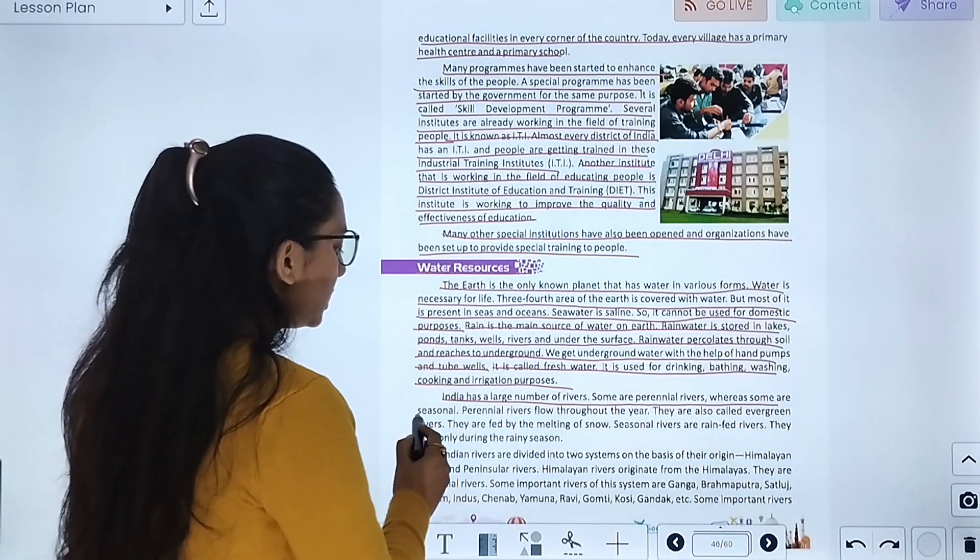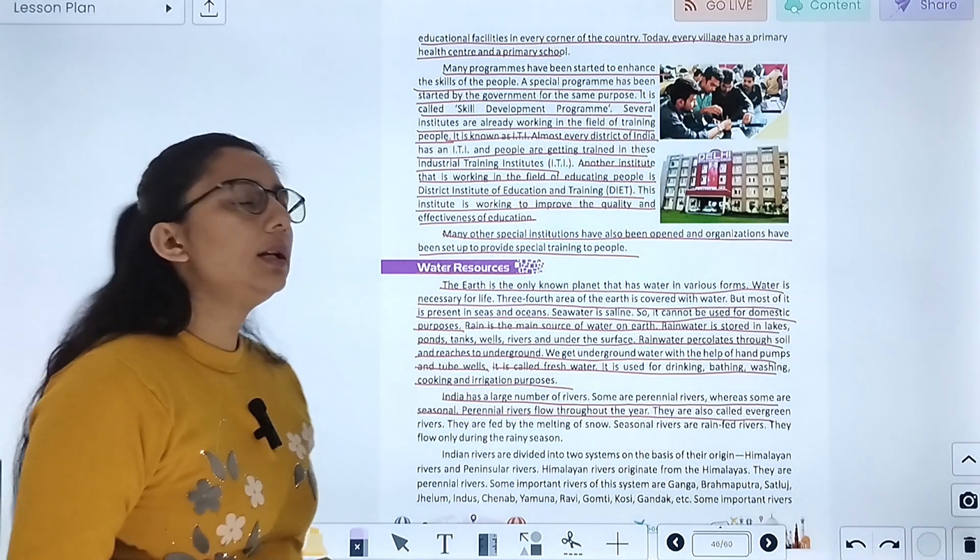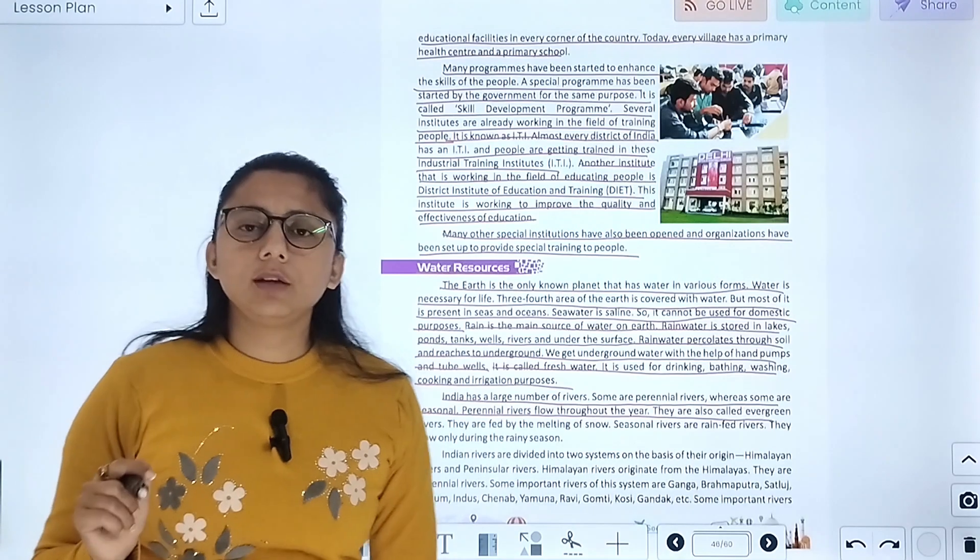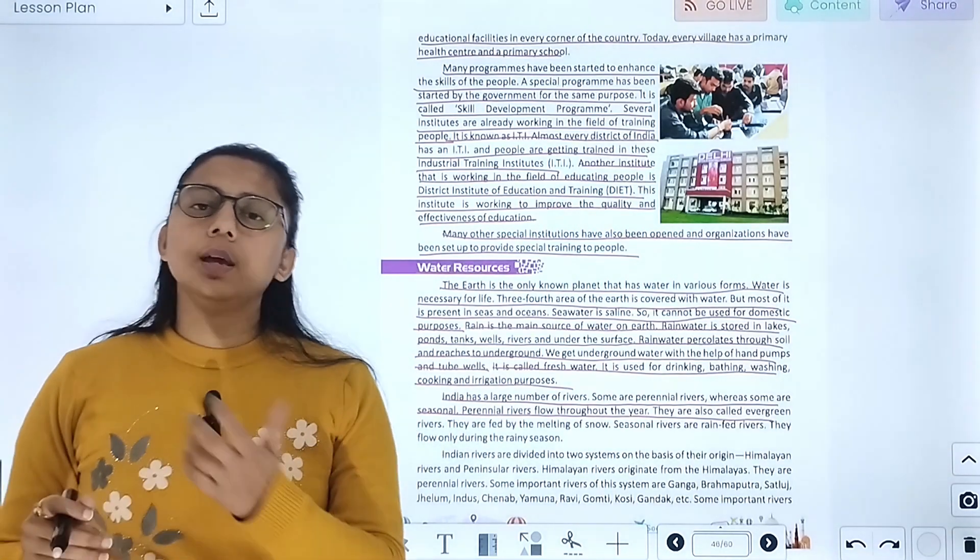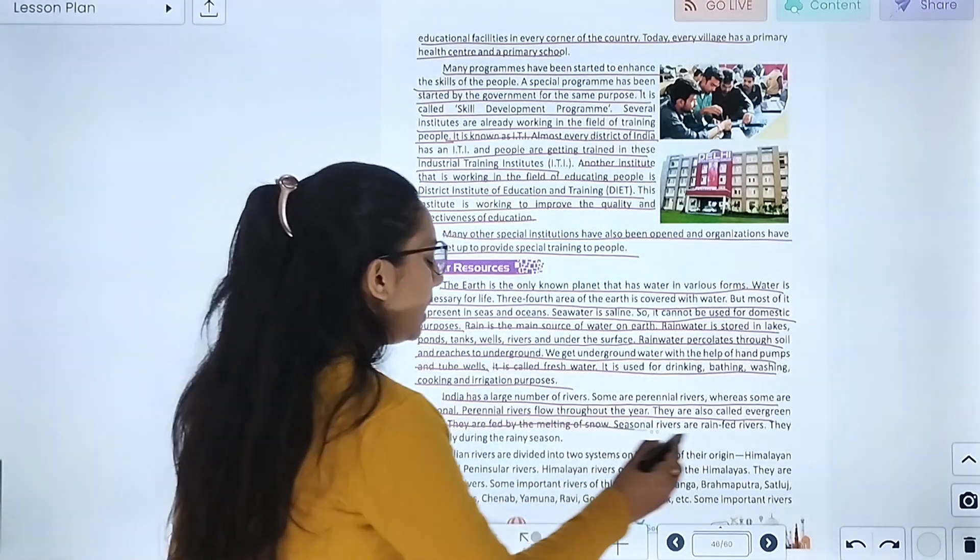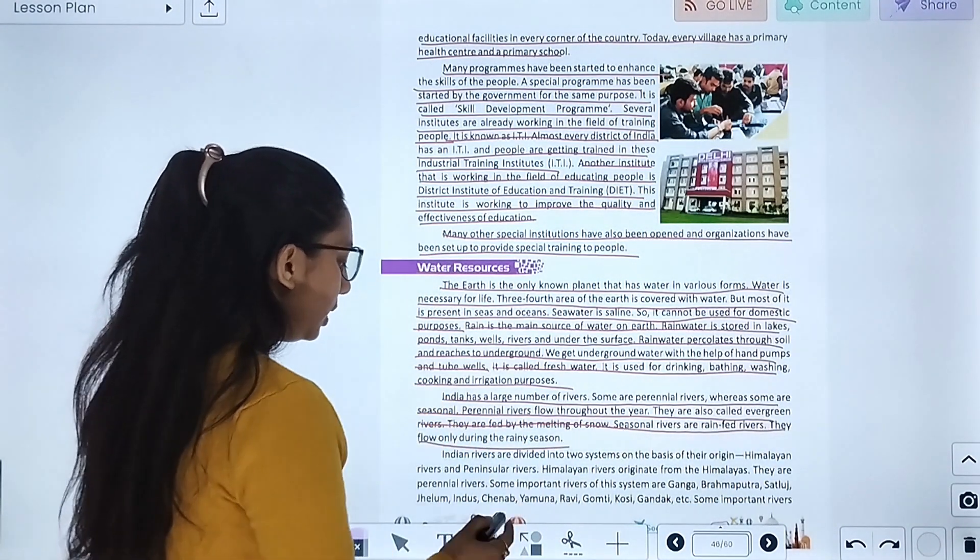India has large number of rivers. Some are perennial rivers while some are seasonal. Perennial rivers flow throughout the year. They are fed by melting of snow. Seasonal rivers are rain-fed rivers. They flow during the rainy season.